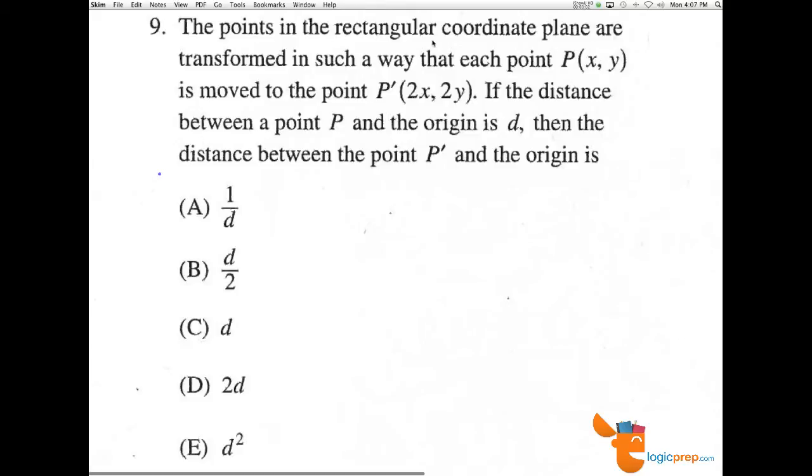Number 9. The points in the rectangular coordinate plane are transformed in such a way that each point (x, y) is moved to the point (2x, 2y). If the distance between a point P and the origin is d, then the distance between the point P' and the origin is what?